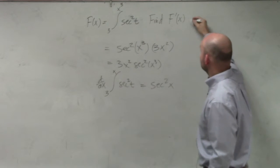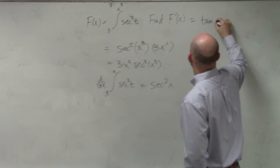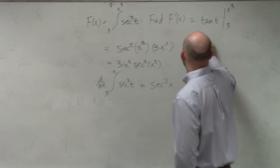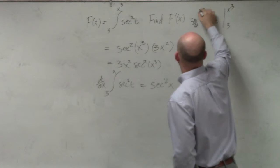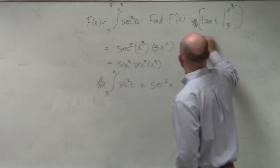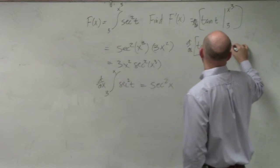Because if you were to work this out, if we're going to integrate this we'd say, OK, that's tangent of t from x cubed to 3. And then we say, OK, now d over dx. So now we say, d over dx of tangent of x cubed minus tangent of 3.